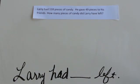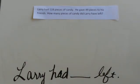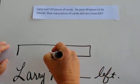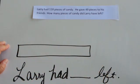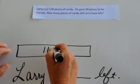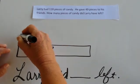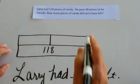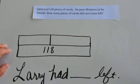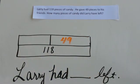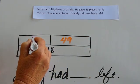Our next step is to draw a unit bar, and this unit bar is going to represent the largest number in the word problem. In this word problem, this will represent the 118 pieces that he started with, because that will be the largest unit. And that unit is shared between the pieces that he gave away and the pieces that he still has.